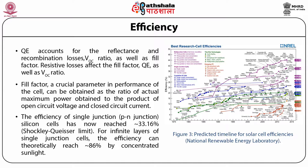The efficiency of single junction, that is PN junction silicon cells, has now reached approximately 33.16%, which is the Shockley-Queisser limit. For infinite layers of single junction cells, the efficiency can theoretically reach approximately 86% with concentrated sunlight. Figure 3 shows the predicted timeline for solar cell efficiencies as given by the National Renewable Energy Laboratory.